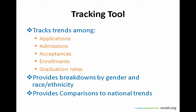The tracking tool takes the data that you submit and allows you to examine trends among applications, admissions, acceptances, enrollments, and graduation rates in your majors. The data is broken down by gender and can also be broken out by race and ethnicity. You can compare your departmental trends to national trends. To get these data, you would work with your institutional research office on campus. NCWIT Academic Alliance members can also submit this information using the appropriate forms on the NCWIT tracking tool webpage.